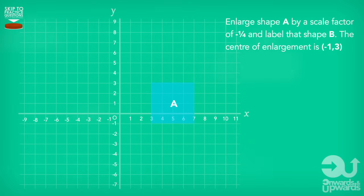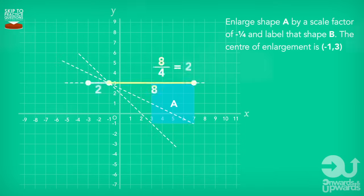We measure the distance between each of the corners of our shape to the centre of enlargement and we divide this distance by four. Now we draw our new lengths on the other side of the centre of enlargement. And then once we are done, we plot and join the corners like so and our new shape is drawn. And just like that, tough question, cracked easily, job done.